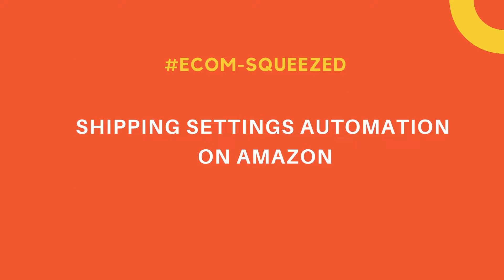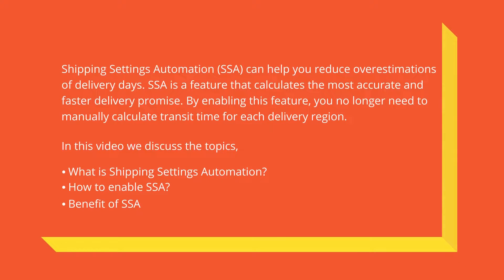Hi, welcome to Retail Outsource. In this video I am going to discuss shipping settings automation on Amazon Seller Central. Shipping settings automation can help you reduce overestimations of delivery days. SSA is a feature that calculates the most accurate and faster delivery promise. By enabling this feature you no longer need to manually calculate transit time for each delivery region.